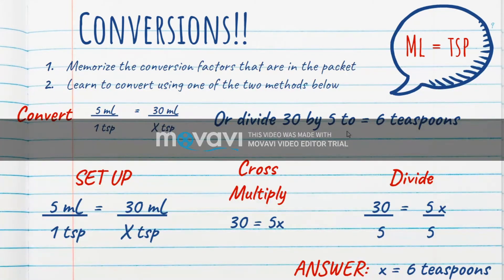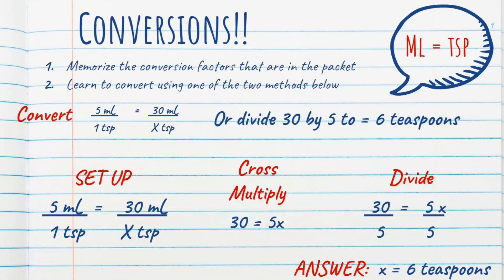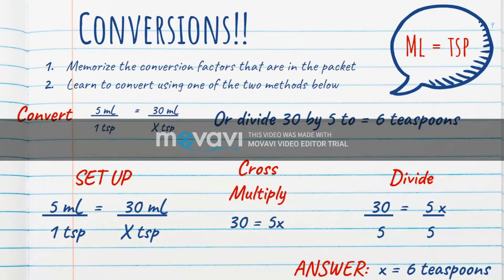Okay. This is important because your orders are going to be in milliliters. Your doctors, providers, whoever they are, are going to write those in milliliters. But your parents are going to call you on the phone and say, I don't know how to give my child 30 mLs of anything. I don't know what an mL is, but I have teaspoons. And you're going to have to guide them how to take their medication correctly. That's why this is important.